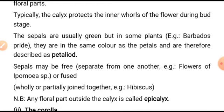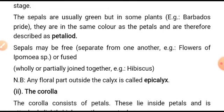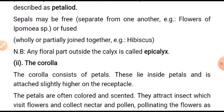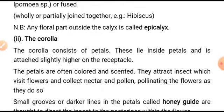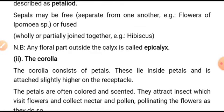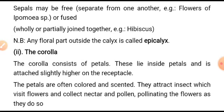The sepals are usually green, but in some plants — for example, Bougainvillea — they are the same color as the petals and are therefore described as petaloids. Sepals may be free and separate from one another, for example in Ipomoea sp., or fused together wholly or partially, for example in Hibiscus. Any proper part outside the calyx is called the epicalyx.